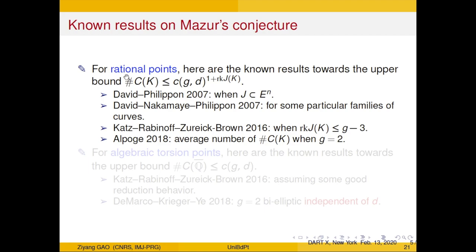There are other ways to study this problem, notably by the Coleman-Chabauty method. For example, Michael Stoll proved this result for hyperelliptic curves when the rank is g minus three. Cass-Rabinoff-Strickland-Brown, generalizing Stoll's proof, proved this result when the rank is small — again, due to the nature of the Chabauty-Coleman method, they are restricted to small rank cases. Very recently, Levent Alpöge, a PhD student at Princeton, proved this result basically for g equals 2, computing the average number of rational points on genus-2 curves and showing it is finite. His proof is also based on Vojta's approach.